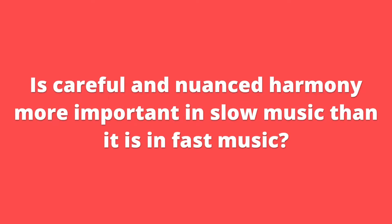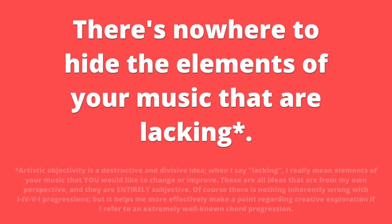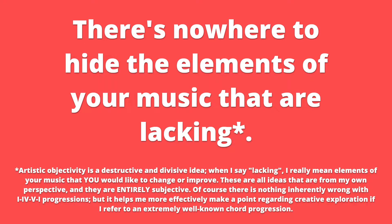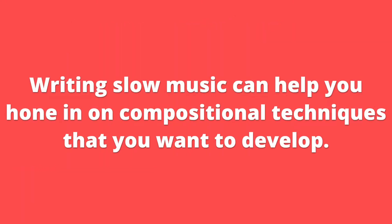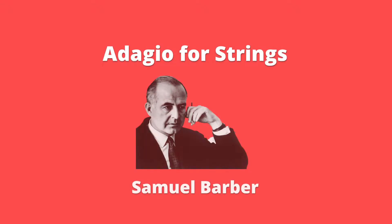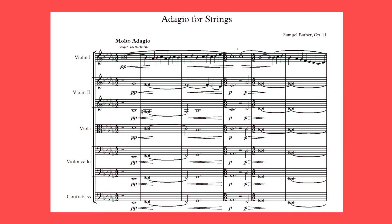Does this mean that having a developed harmonic language is more important in slow music than in fast music? No — at least I don't think so. All it means is that it's harder to get away with in slow music. There's nowhere to hide the elements of your music that are lacking. This is actually one of the great things about trying to write slow music: it can very quickly expose your personal challenges and areas you might need to focus on. For a good example of more interesting harmony, look no further than the famous Adagio for Strings by Samuel Barber. Let's take a listen to the first four bars.